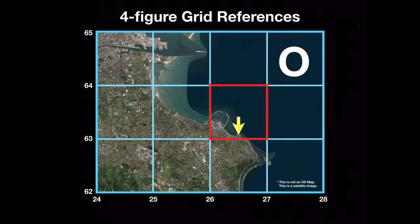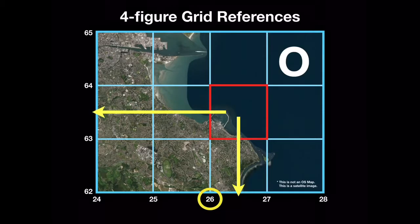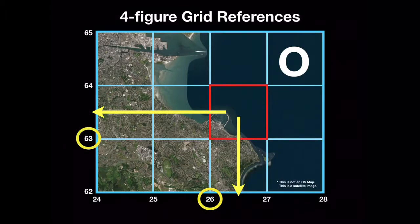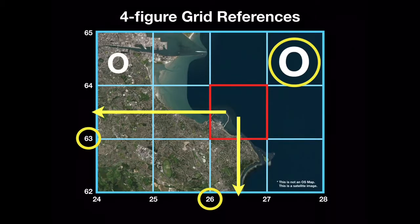To work out the easting of the grid square, drop a line down and read the number to the left of this. To discover the northing, trace a line across the map and read the number below this. A grid reference should always begin with the sub-zone. So the four-figure grid reference for Dun Laoghaire Harbour is O 26 63.